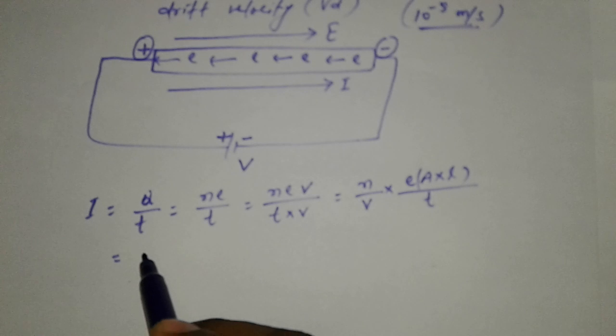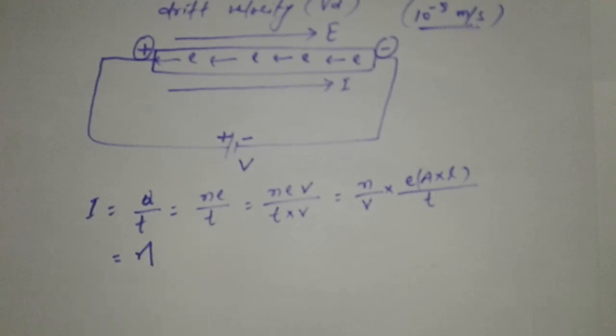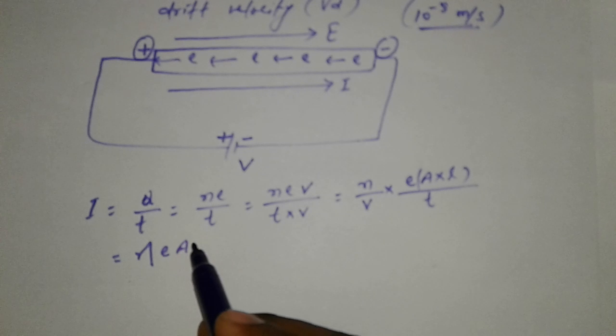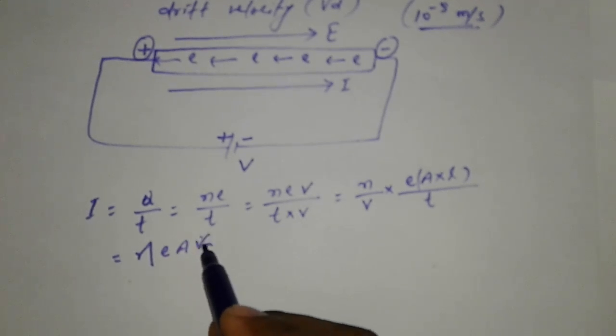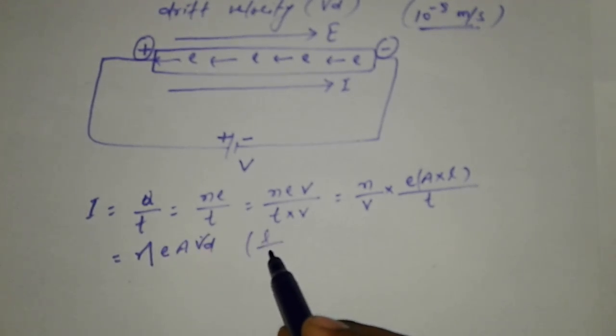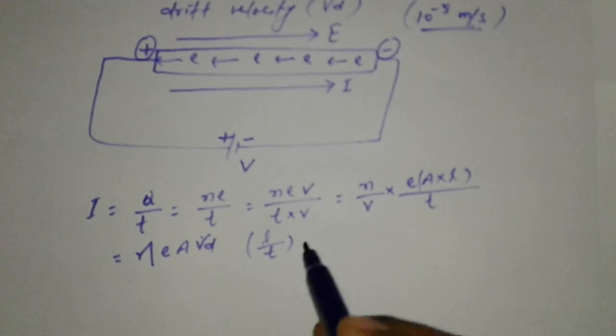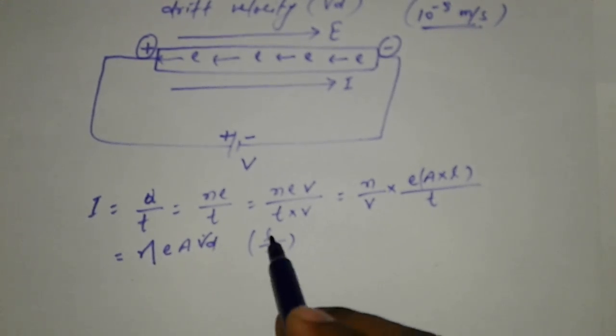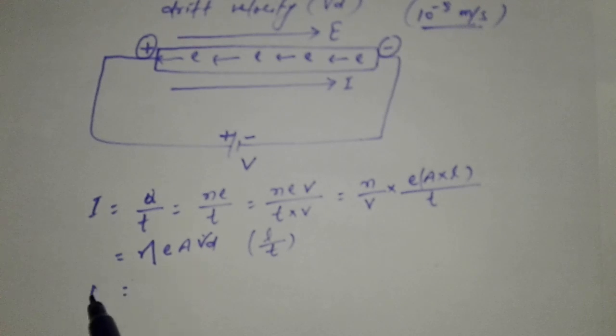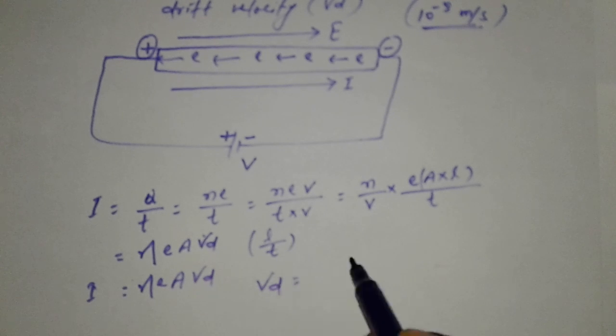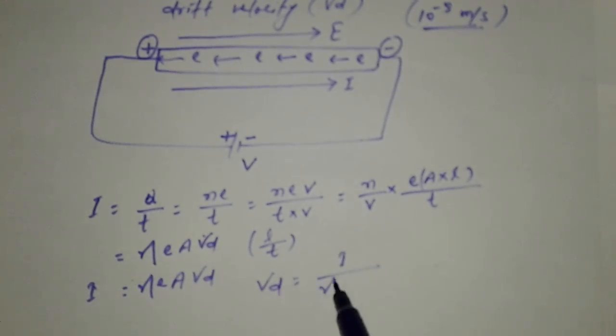Number of free electrons per unit volume, that is eta e A l by t. That is Vd, where Vd is length by time. So I is equal to eta e A Vd.